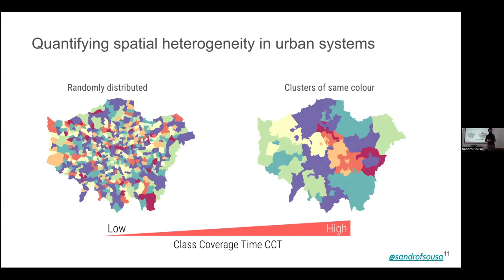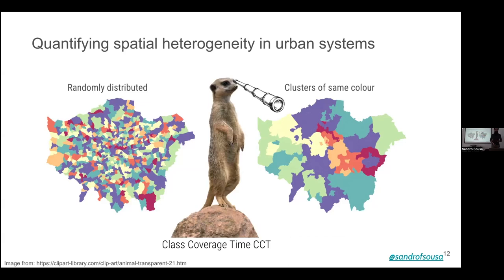Another intuition: you stand from one point on the map and take binoculars to look around — how the distribution of ethnicities looks from a starting point in your area.